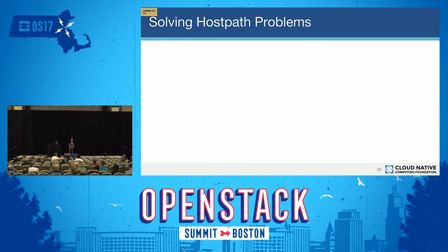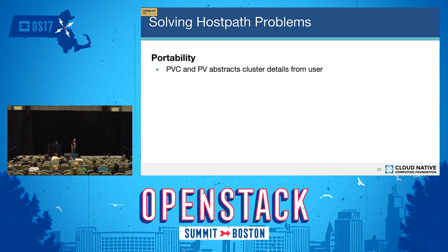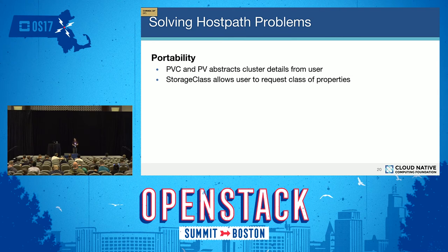So how will persistent volumes and storage classes solve the problems with HostPath? The first problem was portability — in HostPath you specify specific paths on specific nodes, making the application spec not portable. Persistent volumes solve that because the two objects — persistent volume claim and persistent volume — allow you to abstract cluster details from user details. You keep cluster details in the persistent volume object and create portable details in the persistent volume claim. The storage class adds on top to allow users to request specific classes of storage properties.